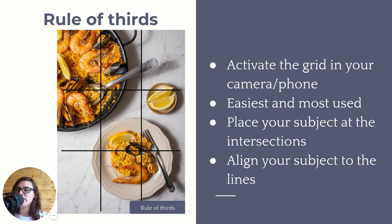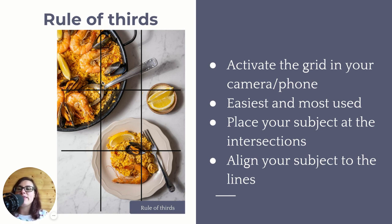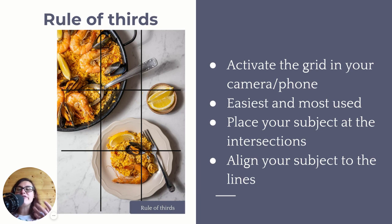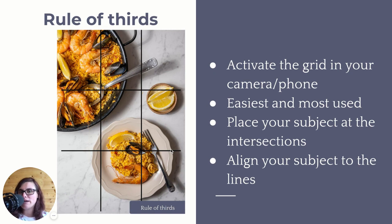Another impactful option is to place your subjects on the lines themselves. In this paella image, the subjects are round, so it's more effective to place them at the intersections — my plate is at the bottom right intersection and the pan is at the top right intersection, creating a diagonal. If you have a different subject — something long and thin, like a celery stick — another useful thing you can do is place it on the line, aligning it with the main line.